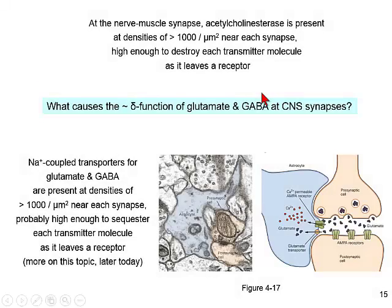There is also a delta function of glutamate and GABA at CNS synapses. There is no enzyme like acetylcholinesterase at CNS synapses — nothing hydrolyzes GABA and glutamate. Instead, GABA and glutamate signals are terminated just about as rapidly by sodium-coupled transporters, which harness the difference between extracellular and intracellular sodium. Those transporters are present at densities of more than 1,000 per square micron.